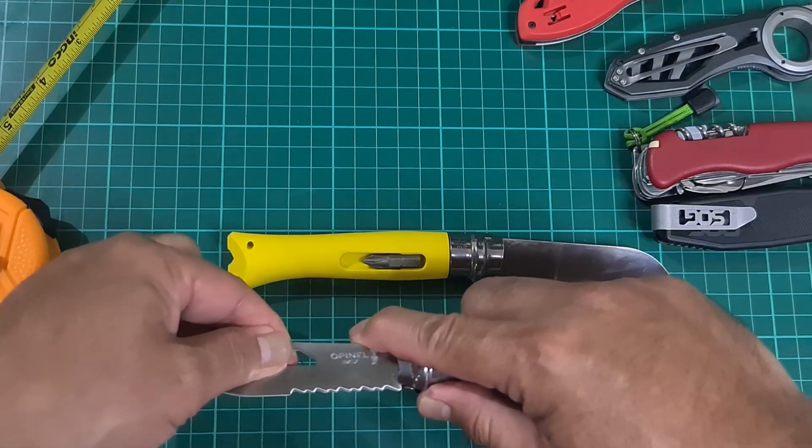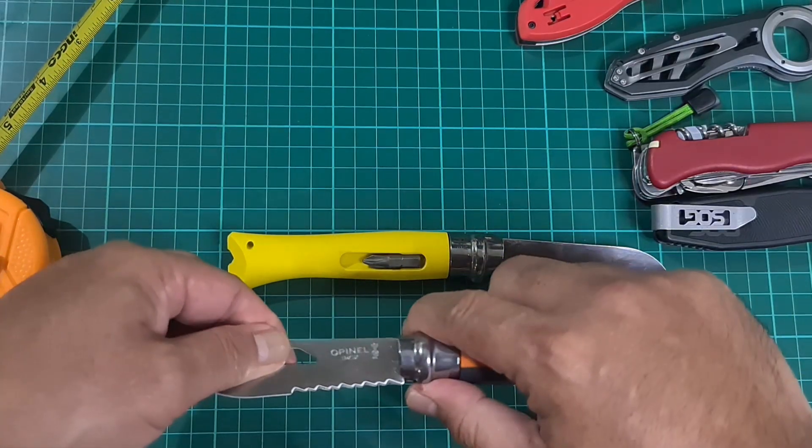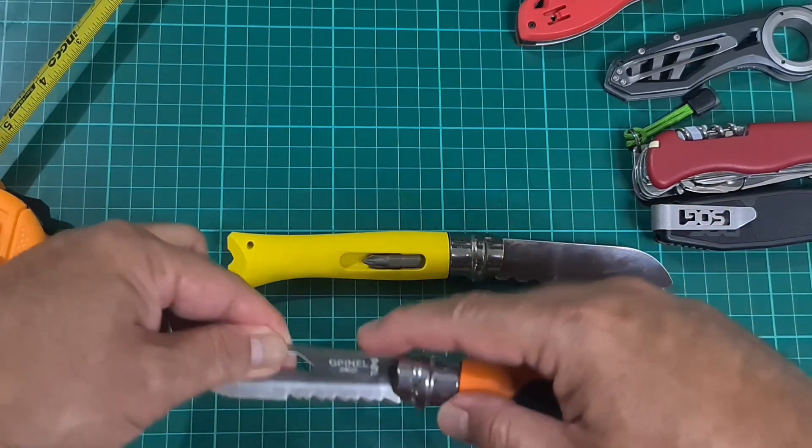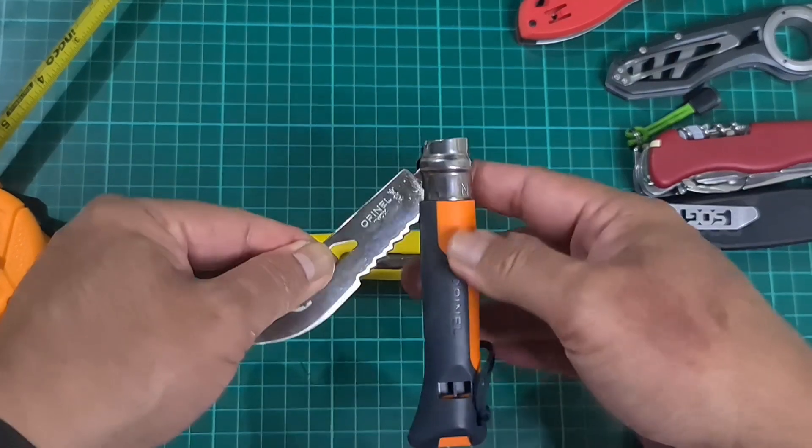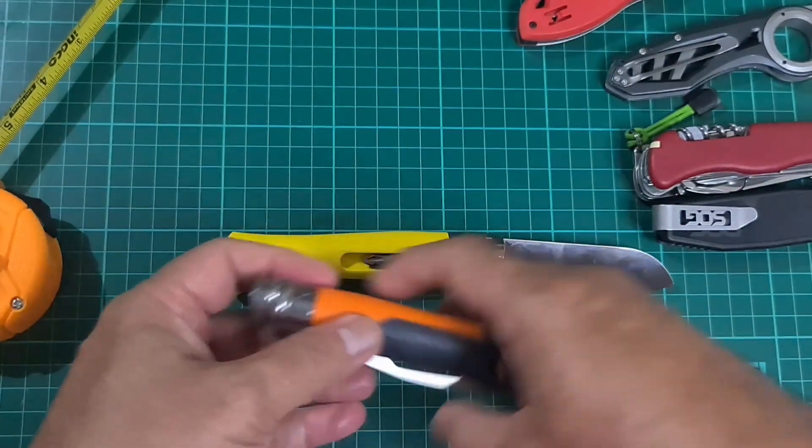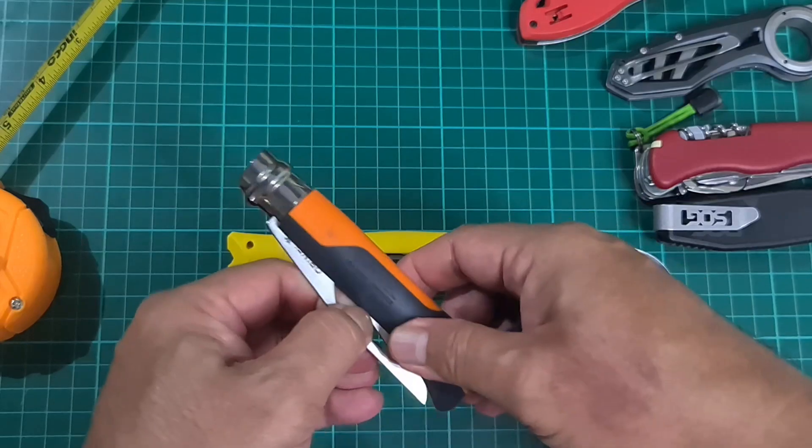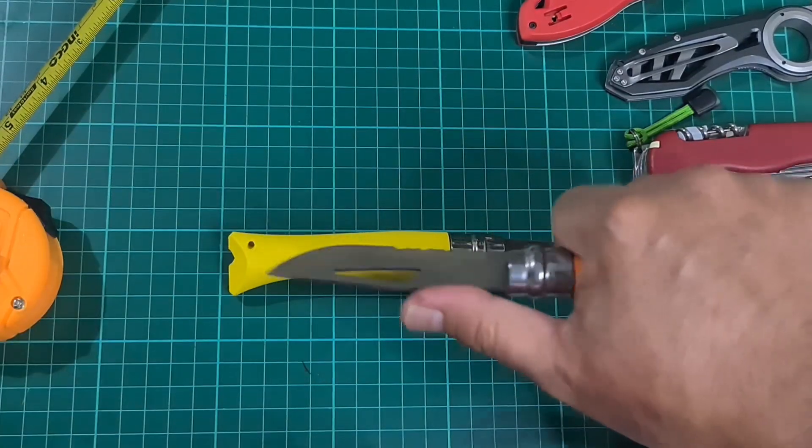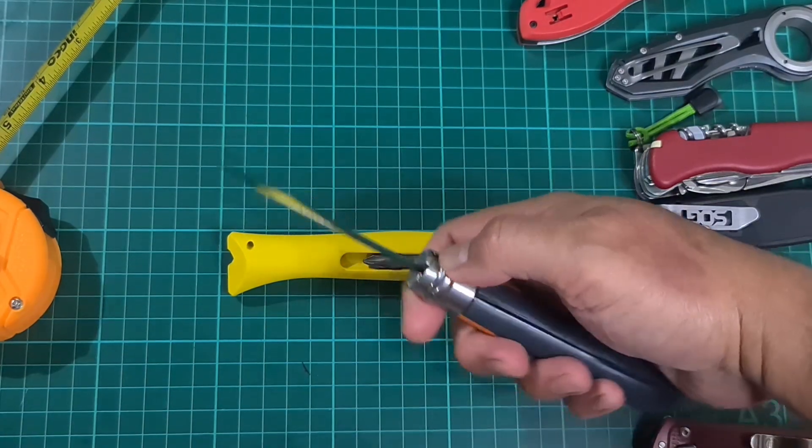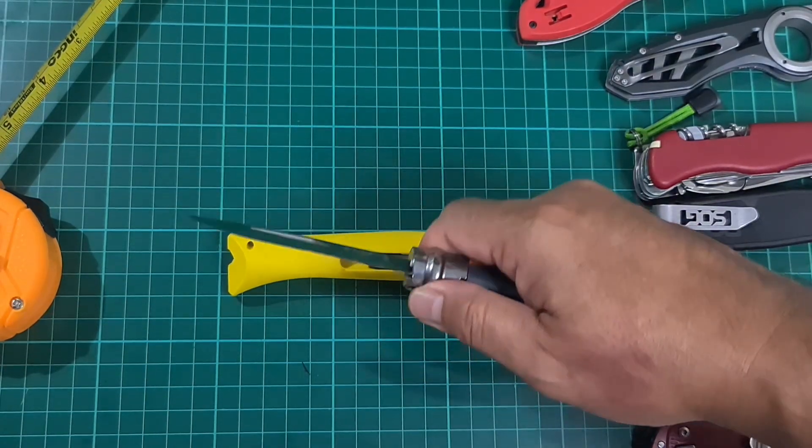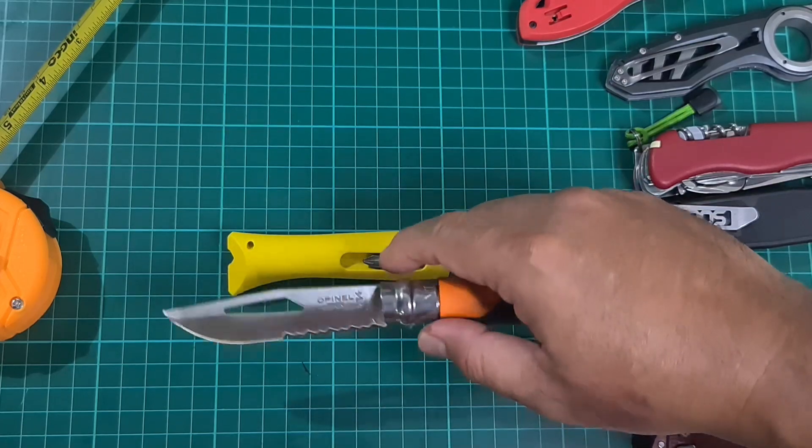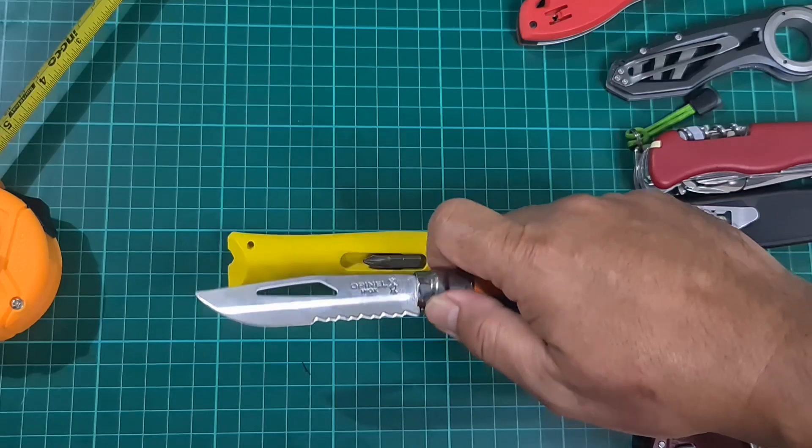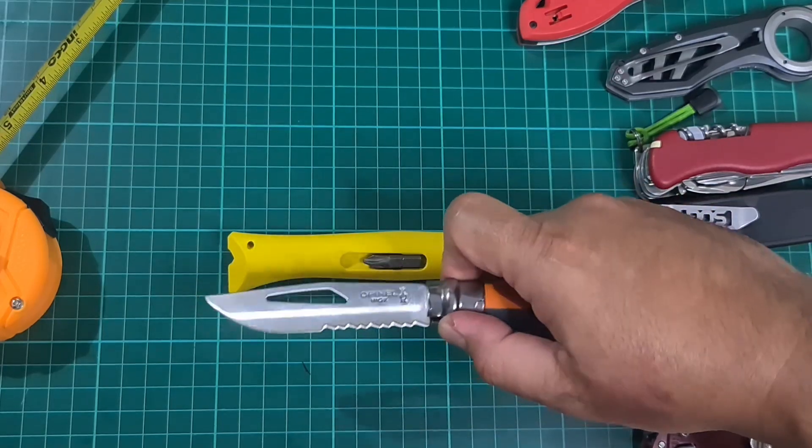Blade material is rated as 12C27 stainless. I still have to test this out with regards to edge retention, but it's a really nice knife and I will definitely use this on my next trip so I could rate it right away.